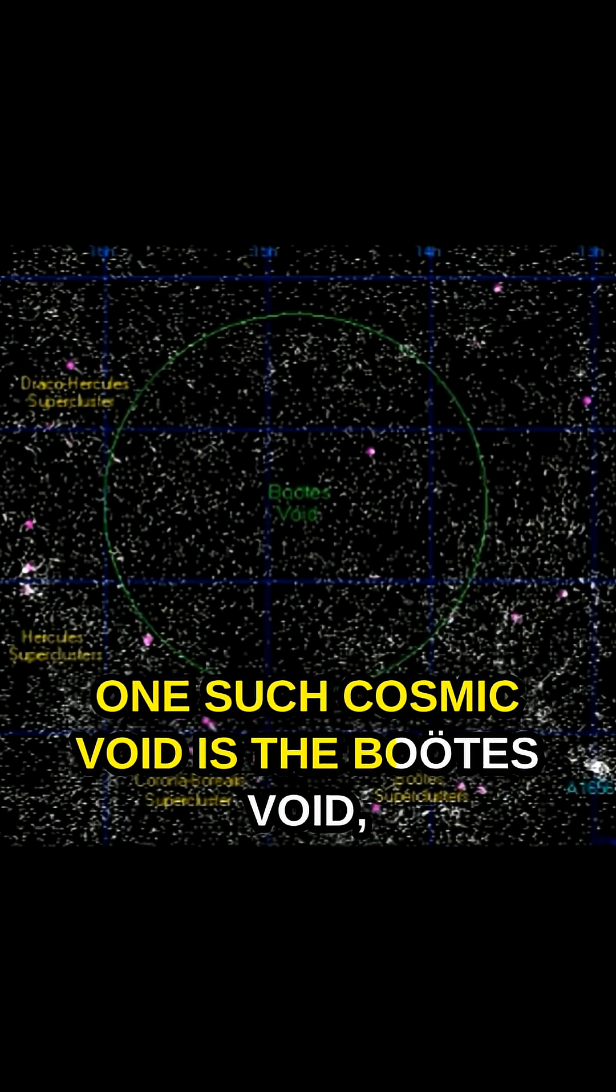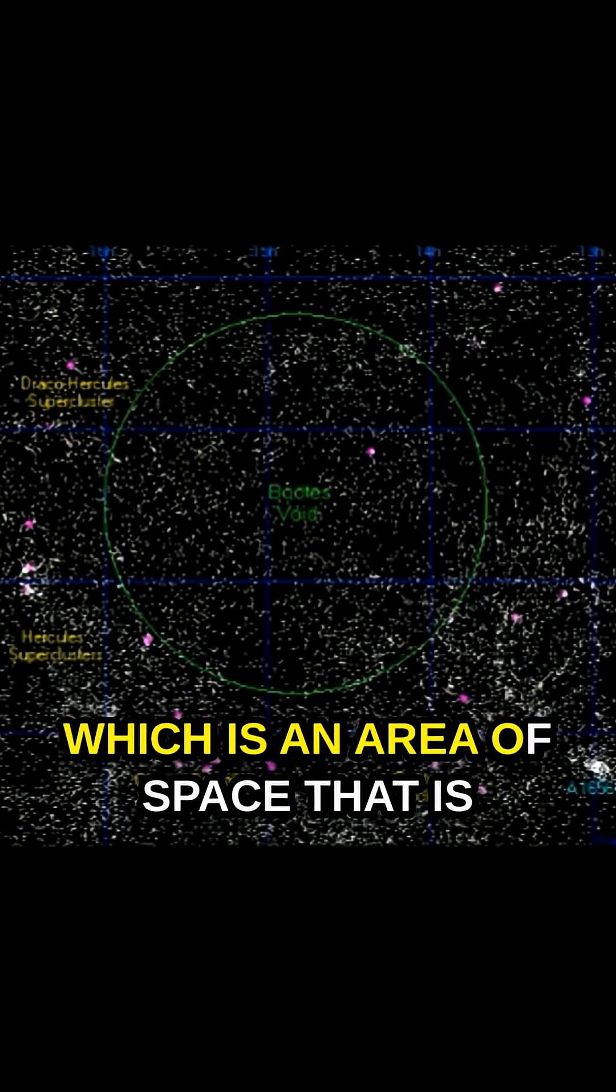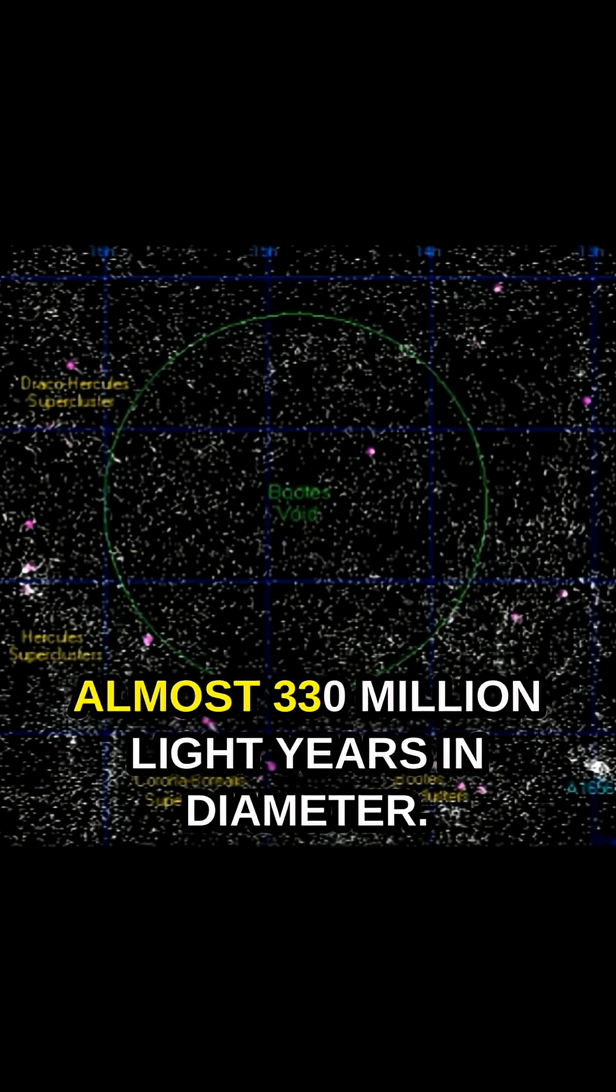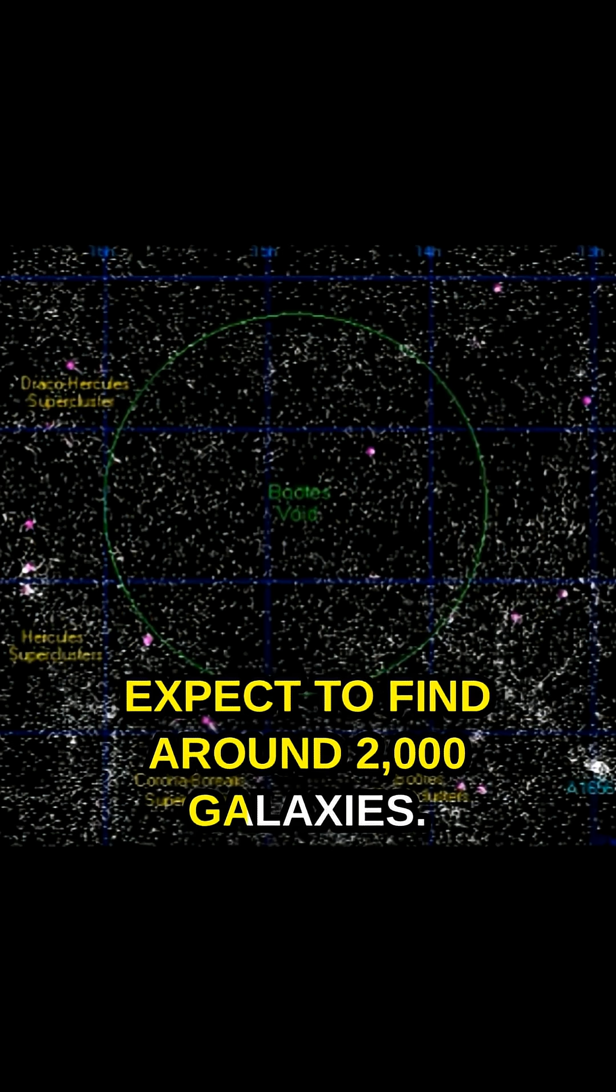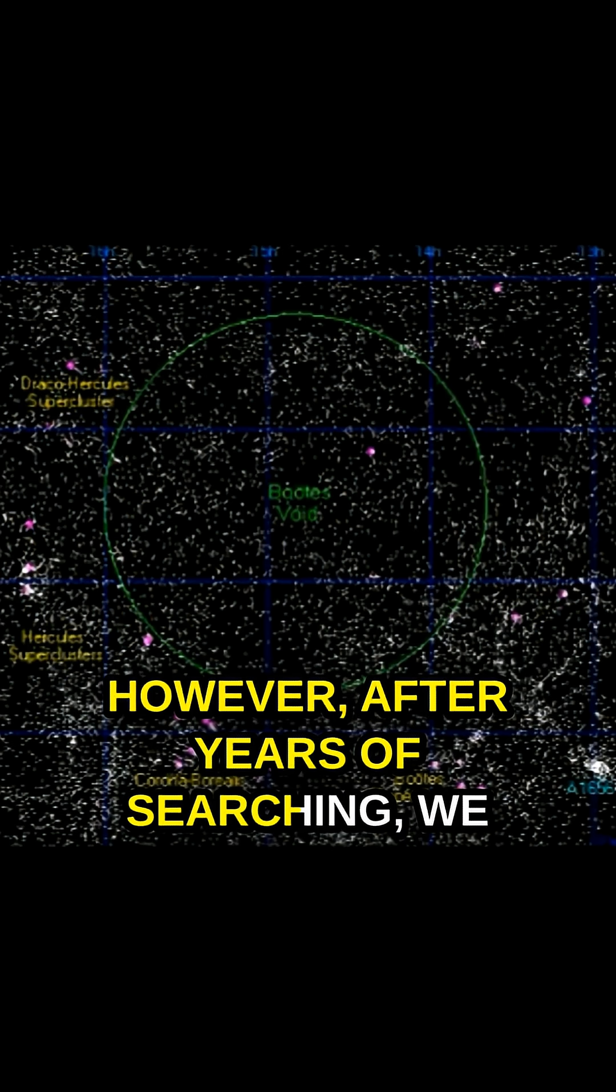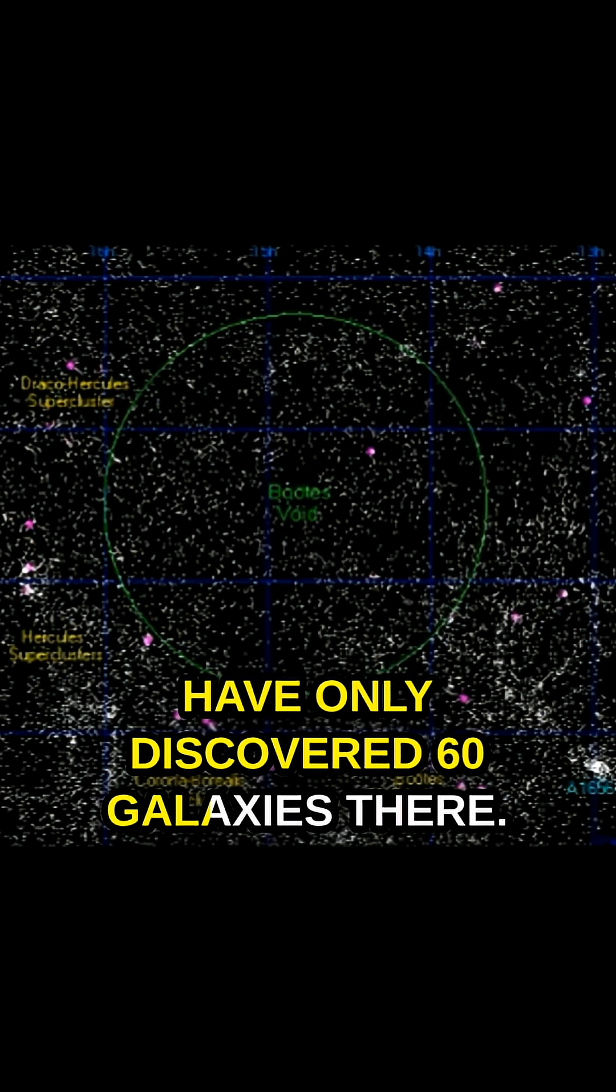One such cosmic void is the Boötes Void, which is an area of space that is almost 330 million light years in diameter. In this amount of space, we would expect to find around 2,000 galaxies, however after years of searching, we have only discovered 60 galaxies there.